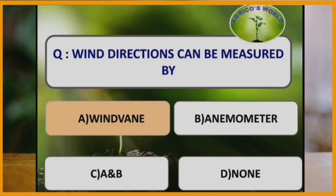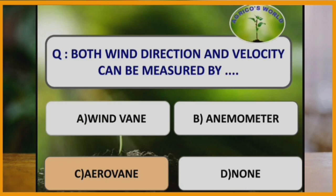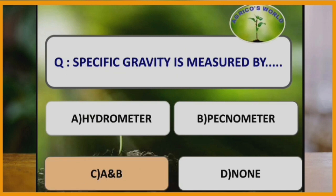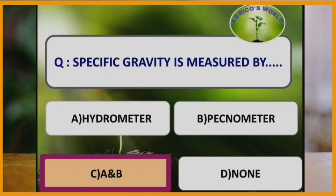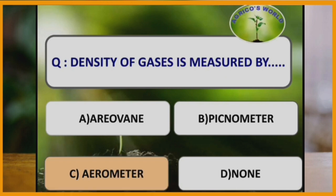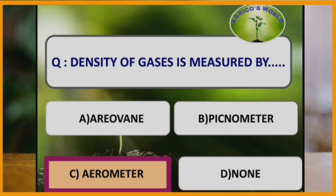Wind direction can be measured using a wind vane, whereas an anemometer is used for measuring wind speed. Both wind direction and wind velocity can be measured using an aerovane. Specific gravity can be measured using a hydrometer and pycnometer. Density of gases is measured using an aerometer.